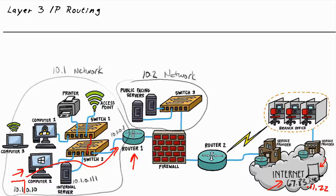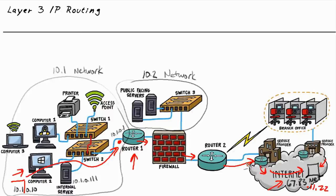So even though at layer three in the IP packet it would say the packet is going to 67.83.11.22, in the Ethernet frame at layer two it would have the layer two address of the default gateway that Bob's computer is configured to use — in this example, Router1 at 10.1.0.1. When Router1 gets it, the story of IP routing is based on what this router has been trained to do. In this topology, the router would forward it to the firewall, the firewall would route it to Router2, Router2 would route it to the internet, and the internet would continue routing it until it reached the server at 67.83.11.22.